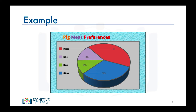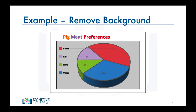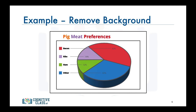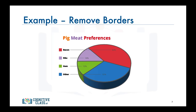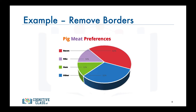Let's apply Dark Horse Analytics' approach to transform this into a visual that's more effective, attractive, and impactive. The message here is that people are most likely to choose bacon over other types of pig meat, so let's get rid of everything that can be distracting from this core message. First, let's get rid of the blue background and the grey background. Let's also get rid of borders as they do not convey any extra information. And let's drop the redundant legend since the pie chart is already color coded.